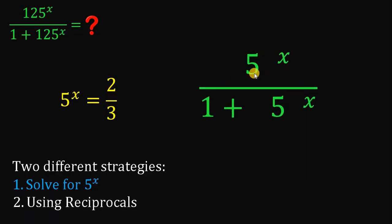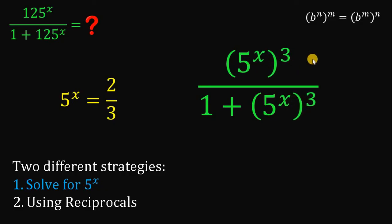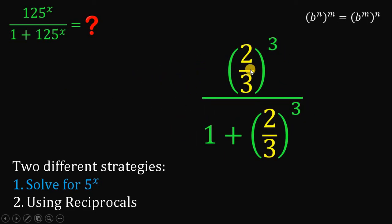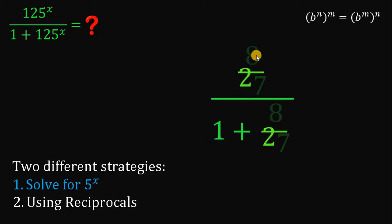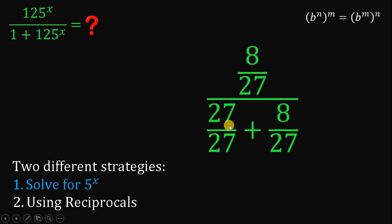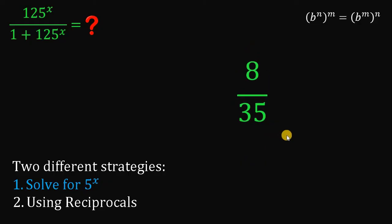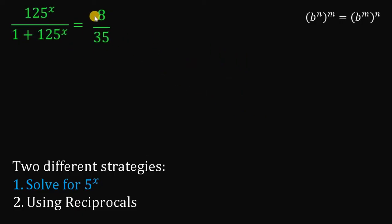First, we know that 125 is 5 raised to 3. Now, using the rule that b raised to n raised to the power of m is equivalent to b raised to m raised to the power of n, 5 raised to 3 raised to the power of x can be written as 5 raised to x raised to the power of 3. Since 5 raised to x equals 2 over 3, we replace all 5 raised to x with 2 over 3. Now, 2 over 3 raised to 3 is 8 over 27. Writing 1 as 27 over 27 and adding gives 35 over 27. Then 8 over 27 divided by 35 over 27 equals 8 over 35. Therefore, the value of the expression is 8 over 35.